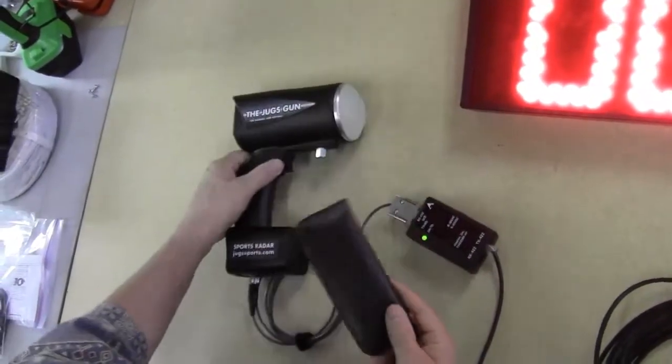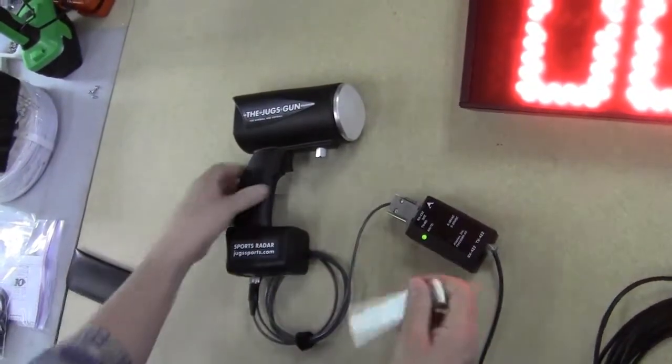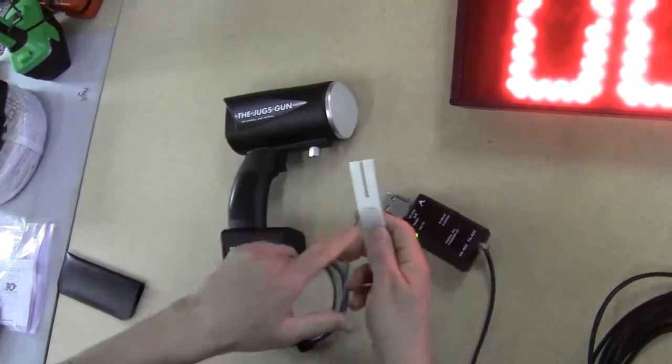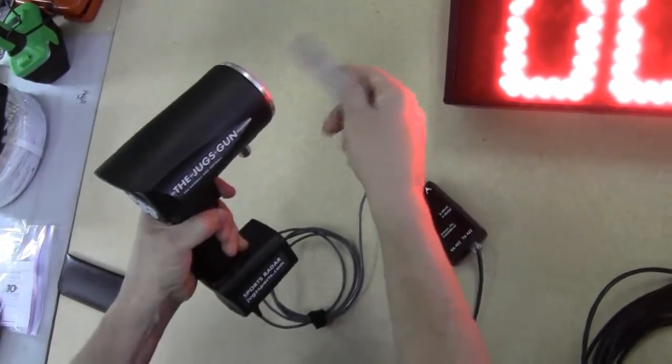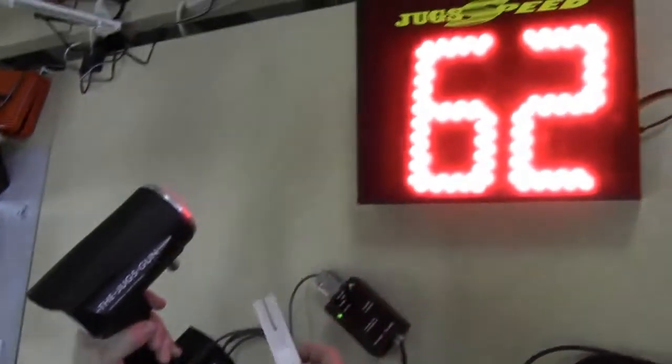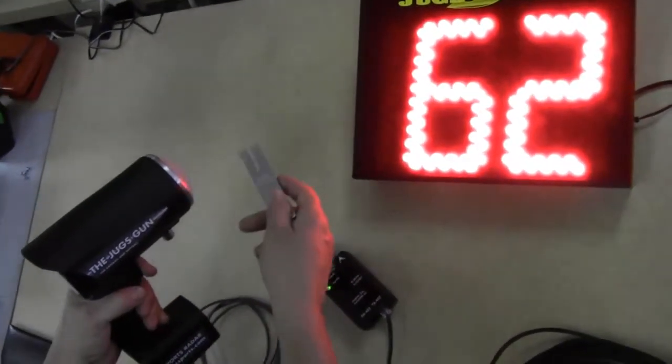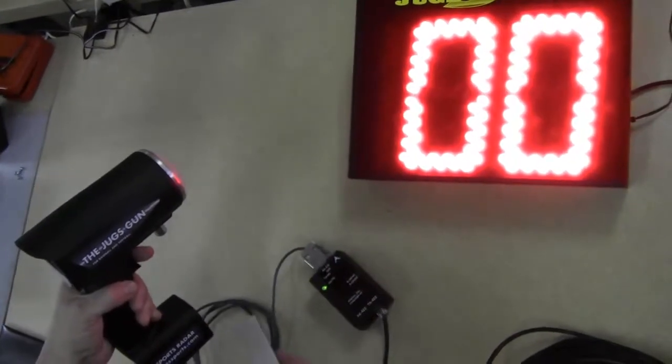Now I'm going to get a tuning fork out. And this tuning fork is tuned to 61 miles per hour. So I'm going to tap the radar gun display, and you'll see 62, which is close enough to 61. And so we see the speed measured.